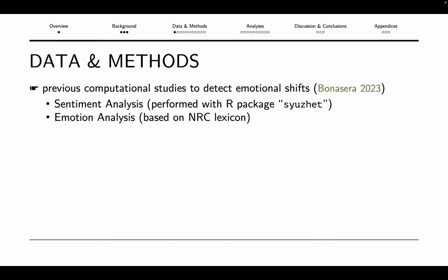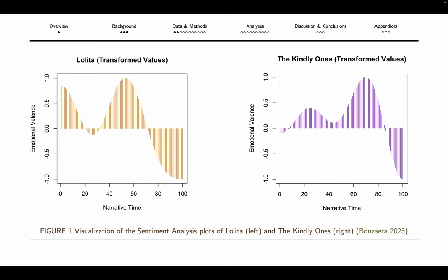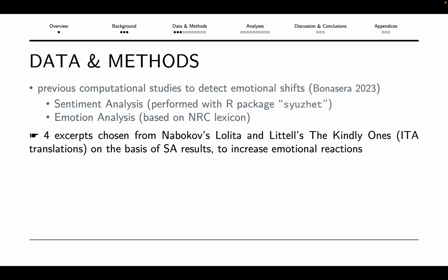My starting point was a computational study I conducted last year, which deployed sentiment analysis to assess which textual portions of these novels are rich in terms of emotional content and which have an extreme polarisation of sentiment. These are two of the outputs of this sentiment analysis conducted on Lolita and on The Kindly Ones. These techniques allow us to locate and visualise not only the overall emotional content conveyed by lexical items in a text, but also the emotional shifts and fluctuations throughout the narrative, which could be related to the oscillation between affective arousal and detachment at the core of negative empathy. The excerpts included in my reader response survey were selected on the basis of this sentiment analysis — I chose portions of text resulting in highly positive or highly negative sentiment scores, to increase the chance of greater emotional and affective reactions.